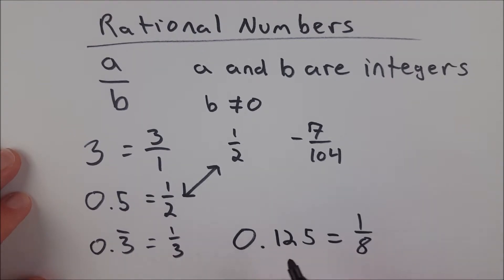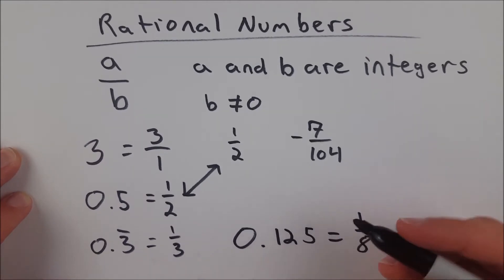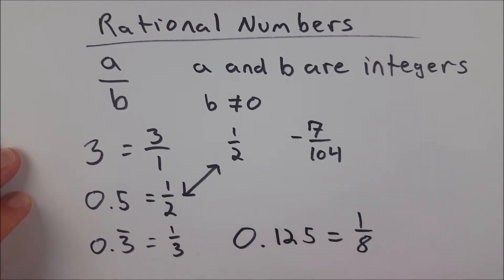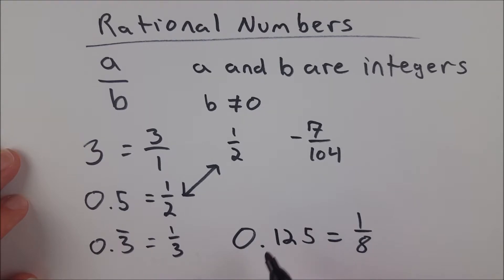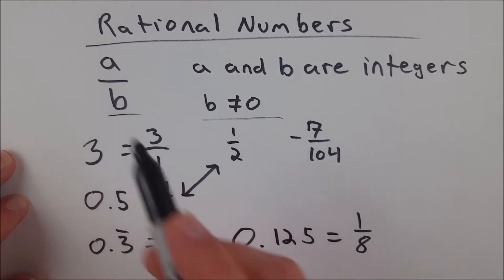So a terminating decimal expansion would be something like this that just comes to a stop. 0.125, that's the end of the number. Repeating would be something like 1 third, where we have 3 repeating on forever. In either of those cases, we can write that decimal as a fraction, one integer divided by another, where the second integer, again, the denominator, is not equal to 0.